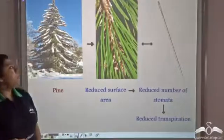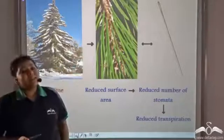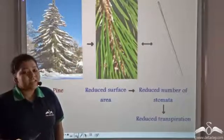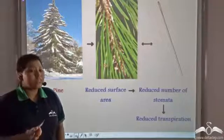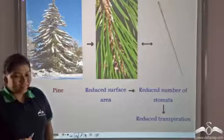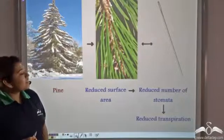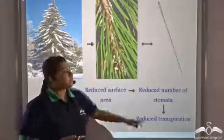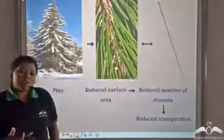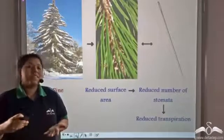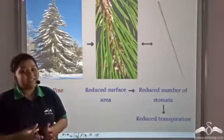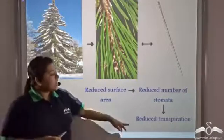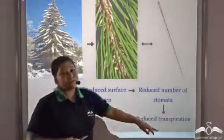Now what about the evergreen plants that are present in these cold climates? They cannot shed their leaves. So what do they do? Well, they decrease their leaf surface area into needle-like structures. So automatically, if the surface area of the leaves decreases, there will be a decreased number of stomata and so there is reduced transpiration.